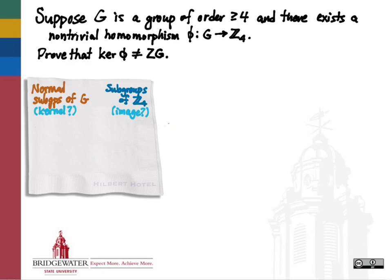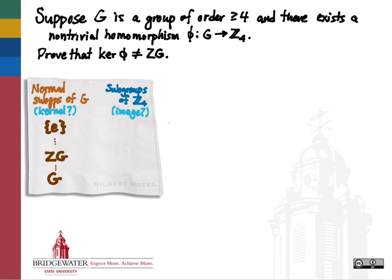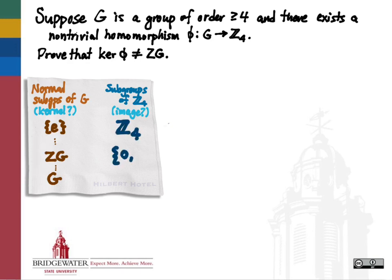We're going to use the approach of listing out all the normal subgroups of g, our domain, and also all of the subgroups of Z₄, the target group, because those are the possible kernels and possible images of our homomorphism respectively. What normal subgroups would g have? We know for sure that the trivial subgroup is normal in g, that the whole group is normal in g, and that the center of g is normal in g — though there might be other normal subgroups, and we don't really have enough information to pin them down.